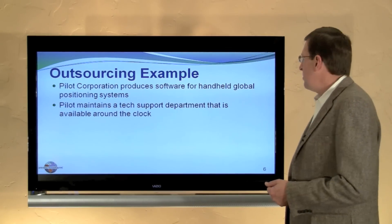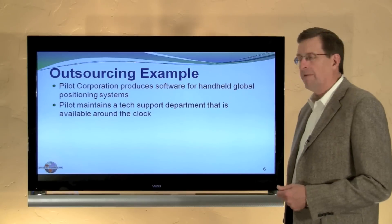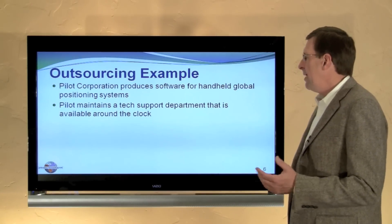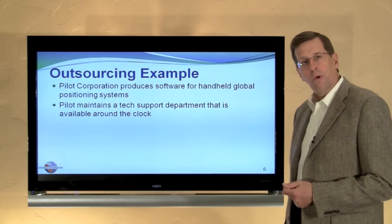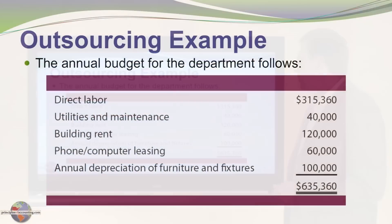For example, Pilot produces software for handheld global positioning systems and they maintain a tech support department available around the clock. Here's the budget. It totals $635,360, consisting of labor, utilities, rent, leasing of phones and computers, and annual depreciation.